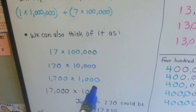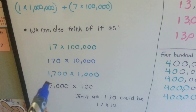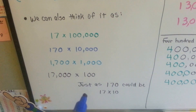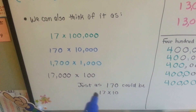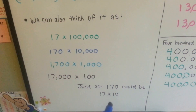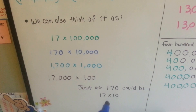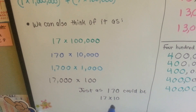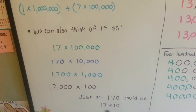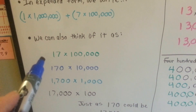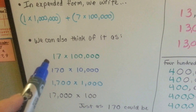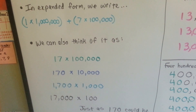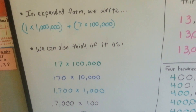We're just taking the zeros off of this side and putting them onto that side. So a hundred and seventy could be seventeen times ten — that's how one million seven hundred thousand could be seventeen times one hundred thousand.